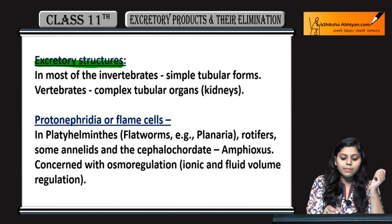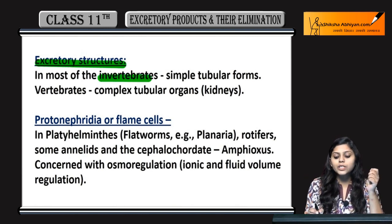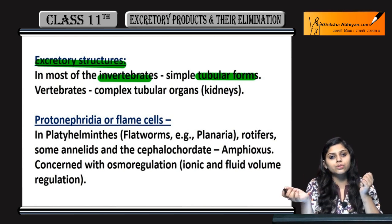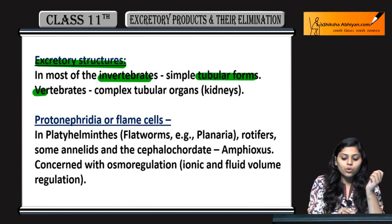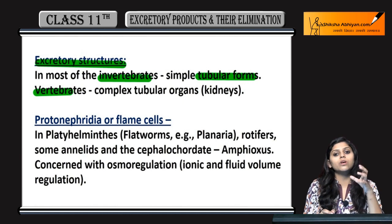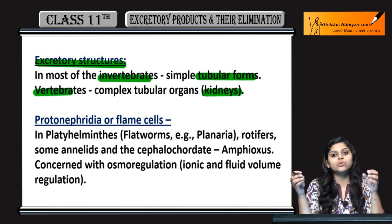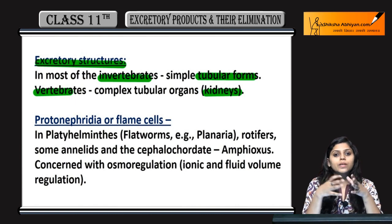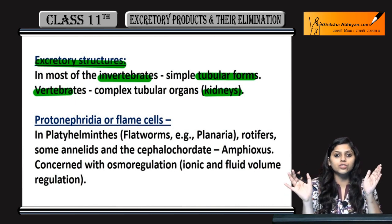Excretory structures ki baat karein to, mostly in invertebrates simple tubular forms hoti hain jahaan se excretion hoti hai. Vertebrates mein complex tubular organs hote hain like kidneys — nephrons ki jo tubular connections hain, woh kidney banati hain, jahaan se excretion hoti hai.